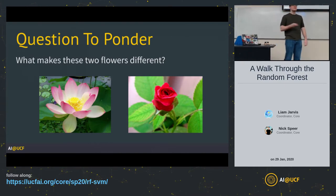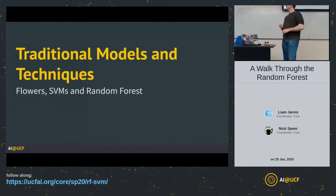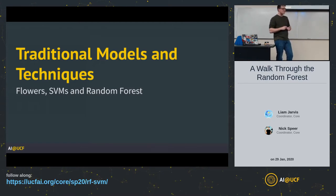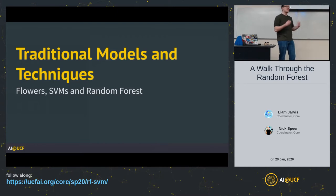There are some obvious differences between these two flowers, so if we want to make some type of model where we know what makes this flower different in a more mathematical sense, do you think we can possibly do that? Today we're going to be talking about traditional models and techniques — basically from the turn of the 1900s up until neural networks exploded, 99% of models out there were an amalgamation of these different techniques.